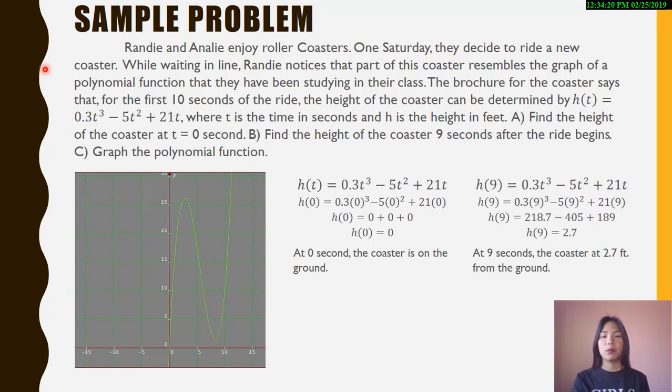The brochure says that for the first 10 seconds of the ride, the height of the coaster can be determined by h(t) = 0.3t³ - 5t² + 21t, where t is the time in seconds and h is the height in feet.